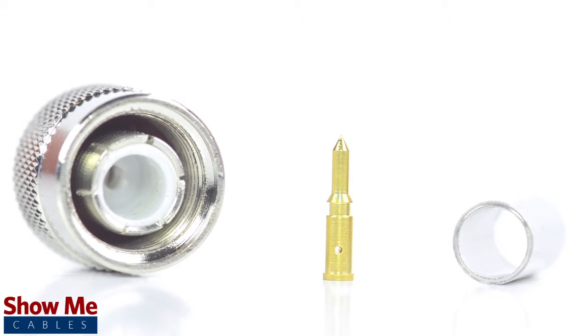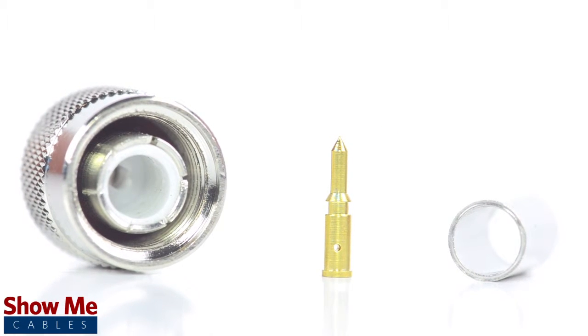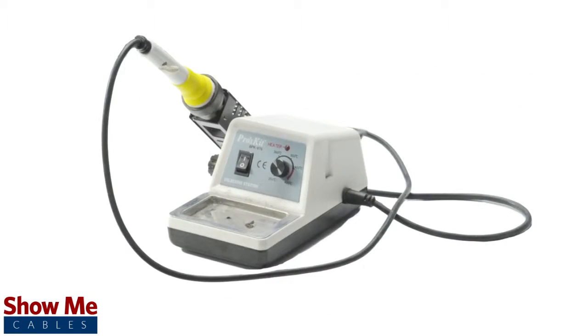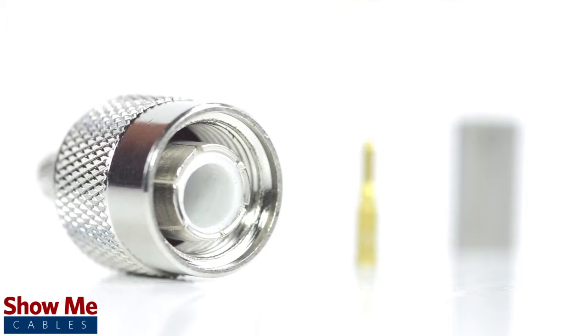The three-piece connector consists of the connector housing, the pin, and the ferrule. For this installation you will need a coax stripper, coax cable, a soldering iron, a crimp tool, and the TNC connector.